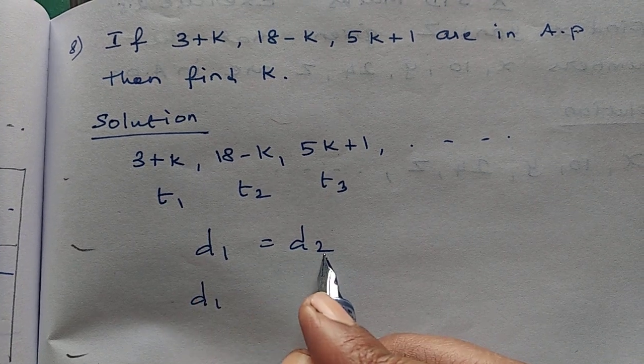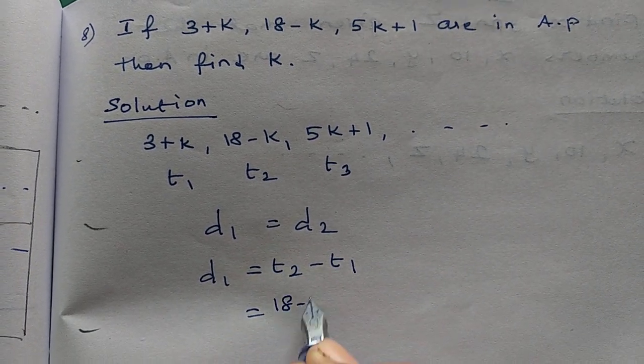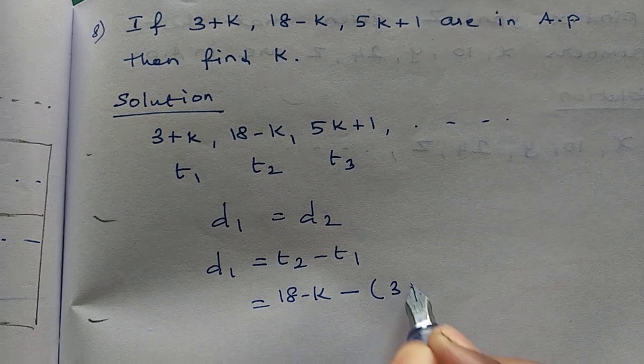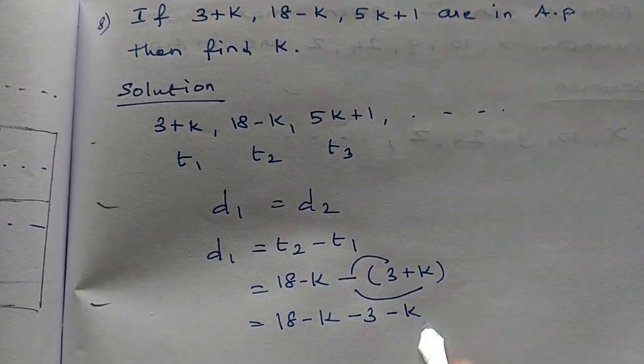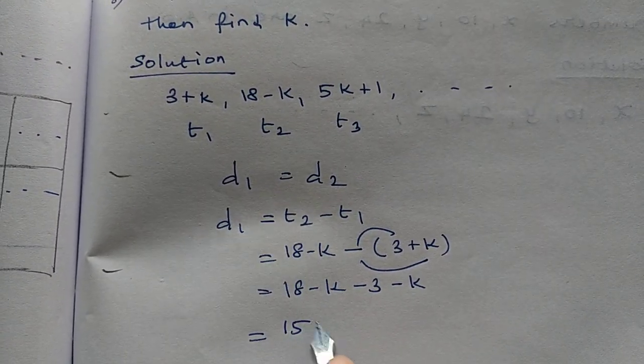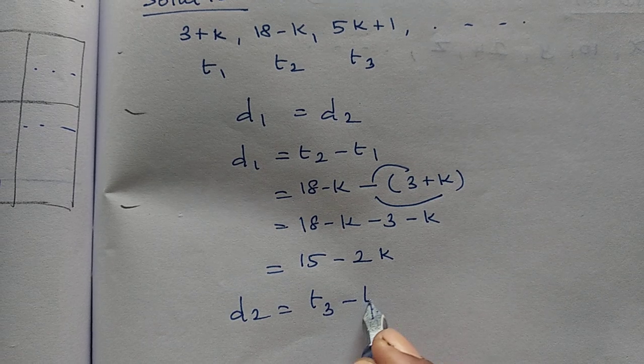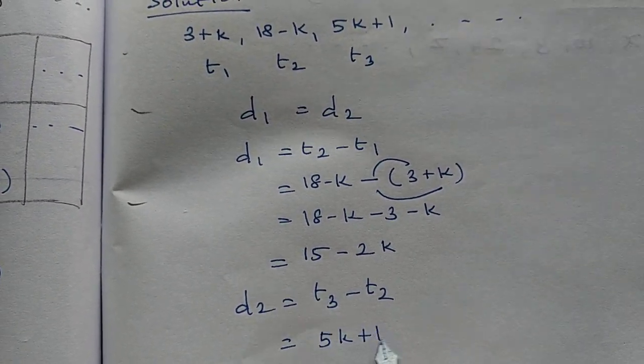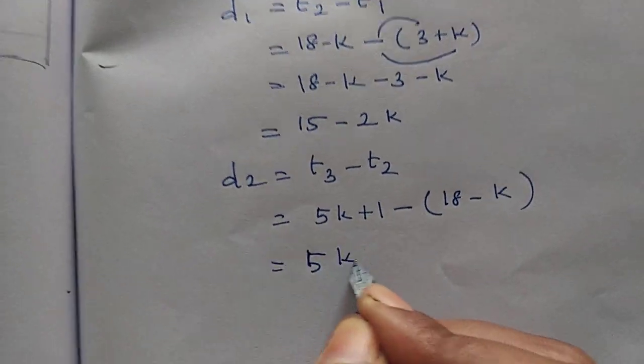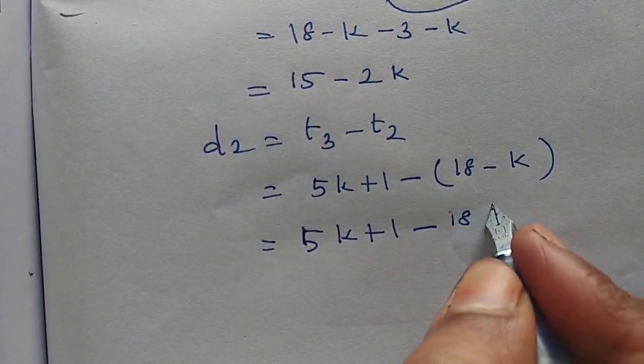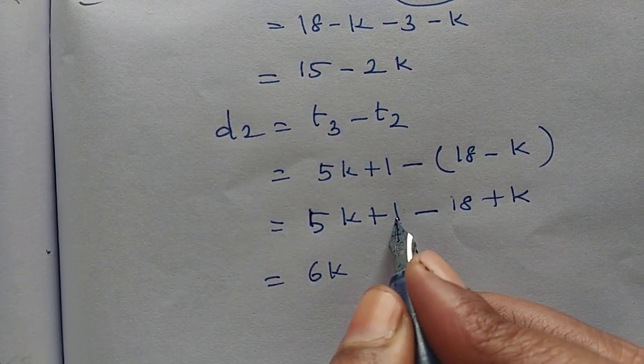d1 formula is t2 minus t1. t2 is 18 minus k minus t1 which is 3 plus k. So 18 minus k minus 3 minus k equals 15 minus 2k. Next d2: t3 minus t2. t3 is 5k plus 1 minus t2 which is 18 minus k. So 5k plus k is 6k, plus 1 minus 18 equals 6k minus 17.